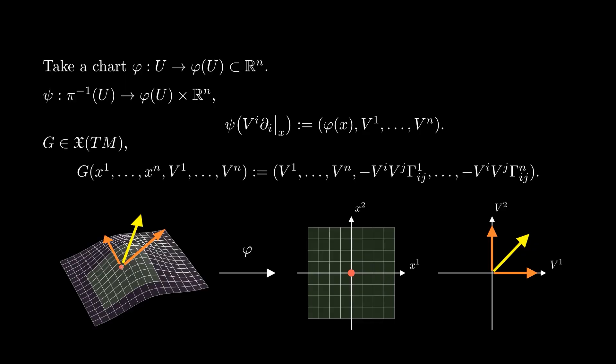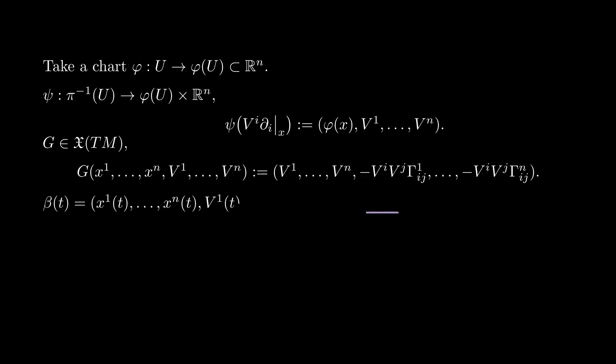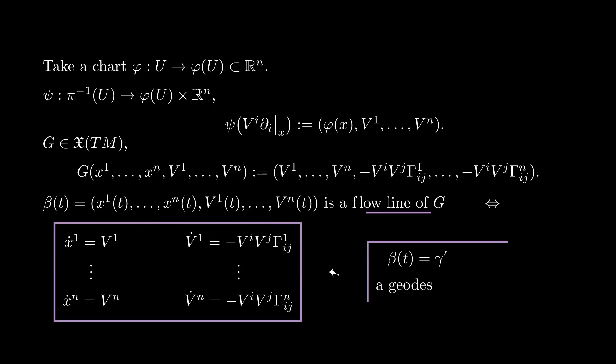On these coordinates, we can write a vector field g on the tangent bundle having this expression. Notice that the vector field g corresponds to the geodesic equation we obtained earlier. This means that a curve in TM is a flow line of g, or a solution to this equation, if and only if it is of the form gamma prime of t with gamma geodesic. This shows that the vector field g does not depend on the chart that we are using, and we call it the geodesic vector field.